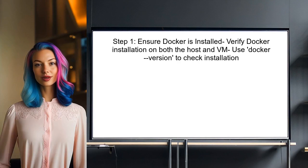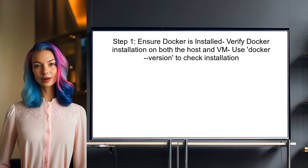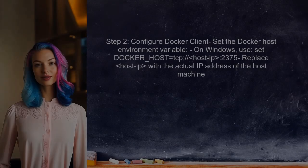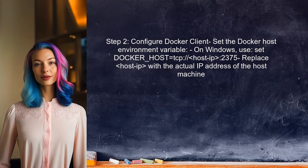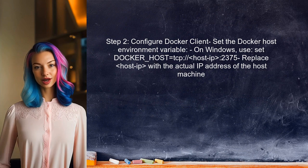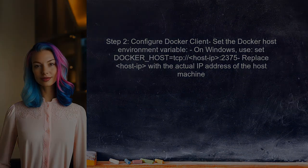To build a Docker container from the command line interface against a remote daemon, the user first needs to ensure that Docker is installed on both the host machine and the virtual machine. Next, the user should configure the Docker client on the virtual machine to communicate with the Docker daemon on the host machine. This involves setting the Docker host environment variable.